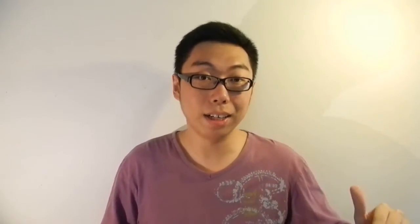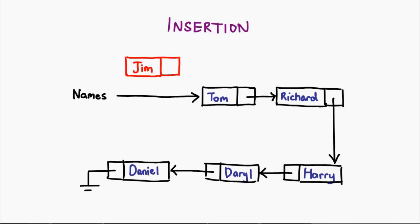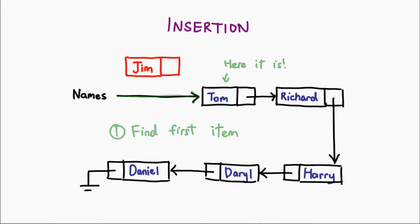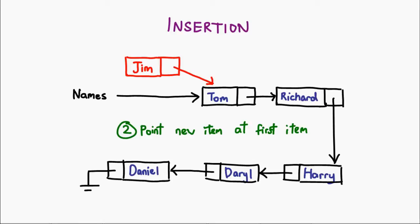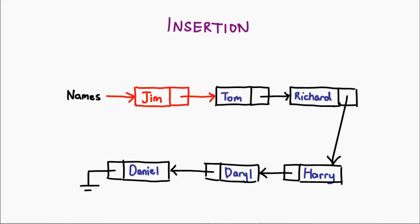Now let's look at insertion. Here's an interesting difference between an array and a linked list. When you want to insert something into an array, it's normally most convenient to add it to the end, because if you add it anywhere in between or at the top, you're going to have to shift all the items to make way for the new item. That is not the case for a linked list. For a linked list, it is easiest to insert something at the very beginning. The first thing we need to do is figure out the first item in the list — luckily the head already tells us that. All we have to do is get our new item to point to that first item, then simply redirect the head to point at the new item. There you go, we've just added a new item to the head of a linked list.